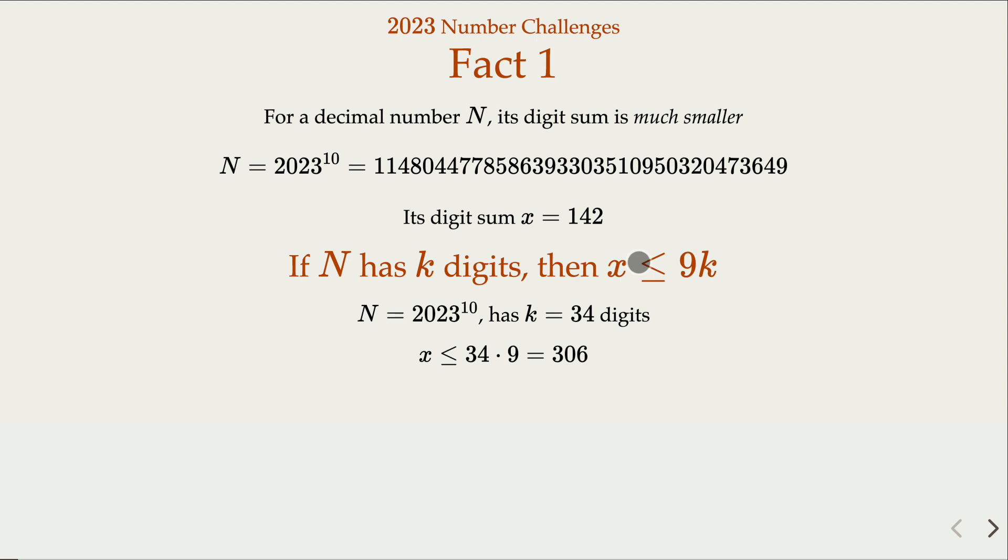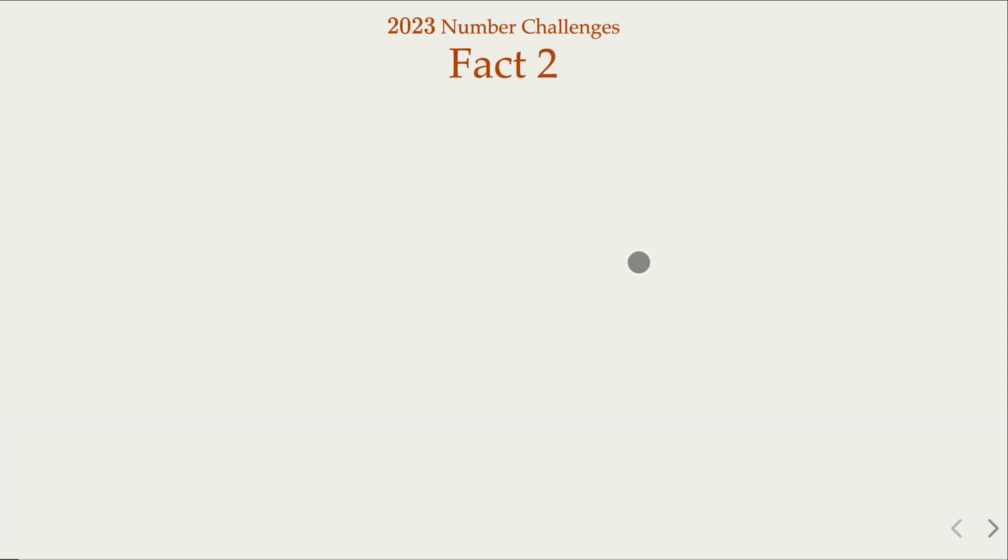Another important fact about digit sum versus the number itself is that when you look at the value mod 9, they are congruent. In mathematical equation, n is congruent with x mod 9. For example, I have a number here 3576. 3576 mod 9 is 3, and digit sum here is 21, and 21 is also congruent to 3 mod 9. So the two are congruent.